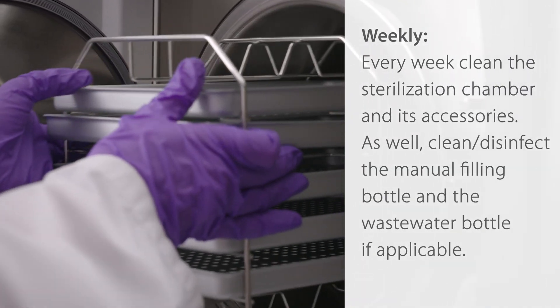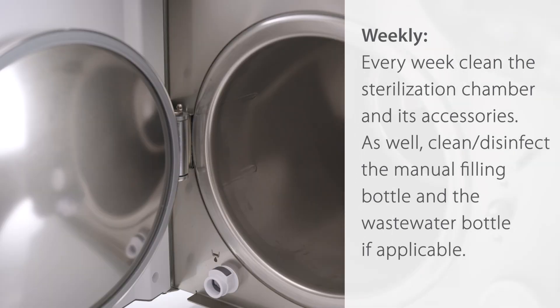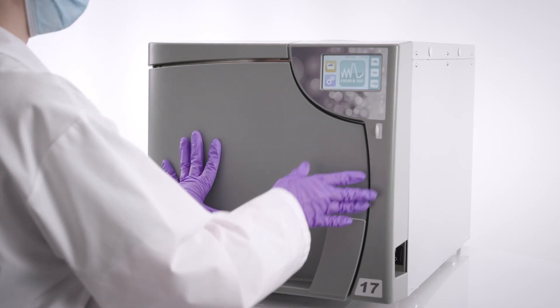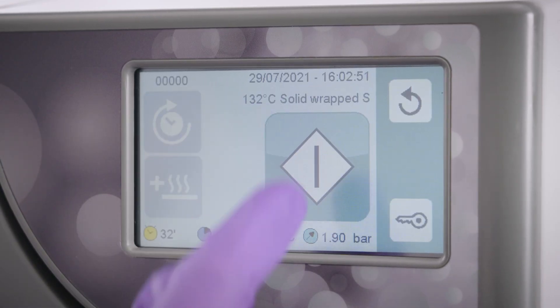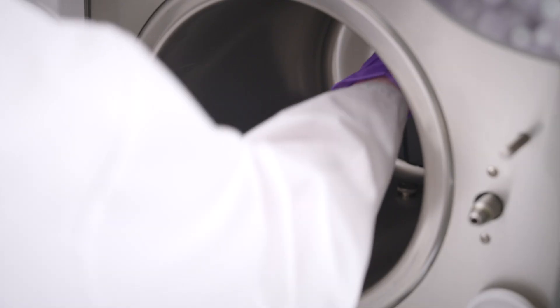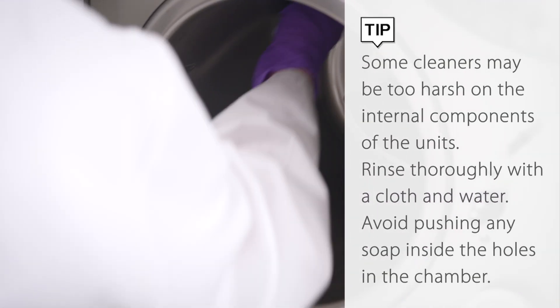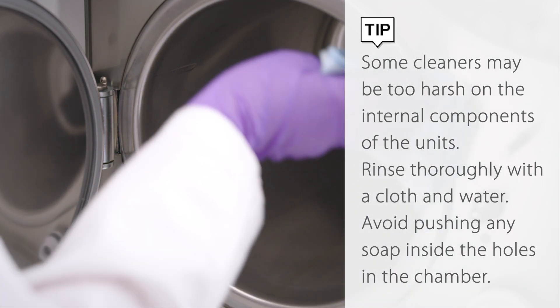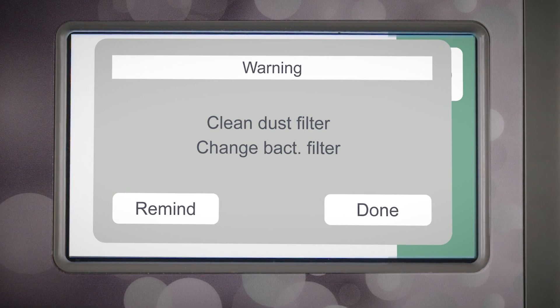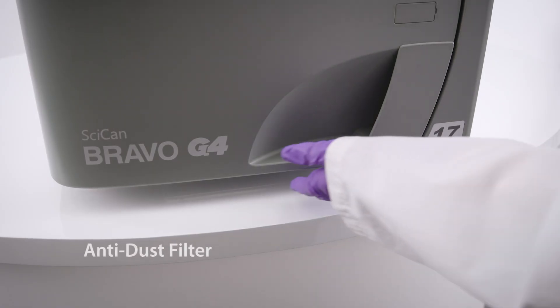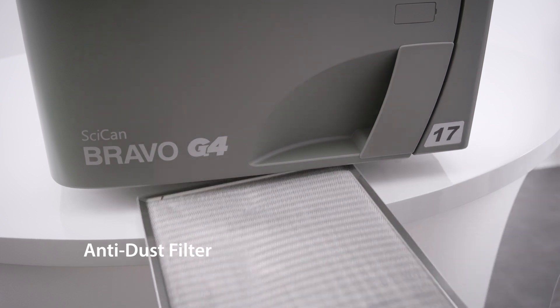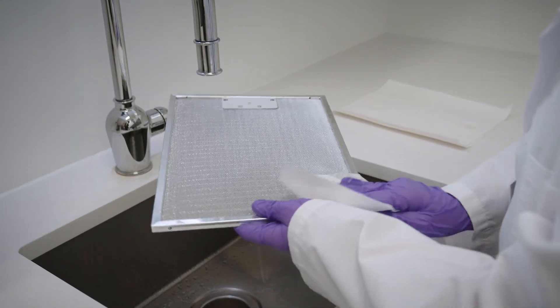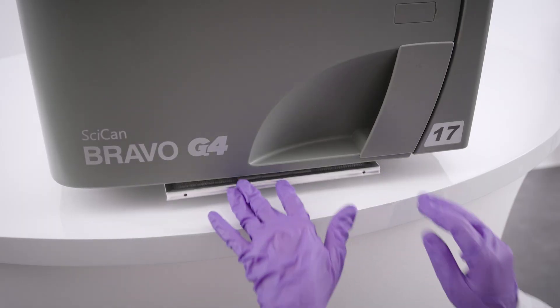Weekly, every week, clean the sterilization chamber and its accessories. As well, clean and disinfect the manual filling bottle and the wastewater bottle, if applicable. Run one empty cycle after using any cleaner or soap. Helpful tip: Some cleaners may be too harsh on the internal components of the units. Rinse thoroughly with a cloth and water. Avoid pushing any soap inside the holes in the chamber. The anti-dust filter should be cleaned weekly as well. To clean the anti-dust filter, remove the filter from the lower part of the autoclave, thoroughly rinse with water, and dry it before refitting. The filter can also be cleaned using a jet of compressed air, making sure not to disperse any dust into the environment.